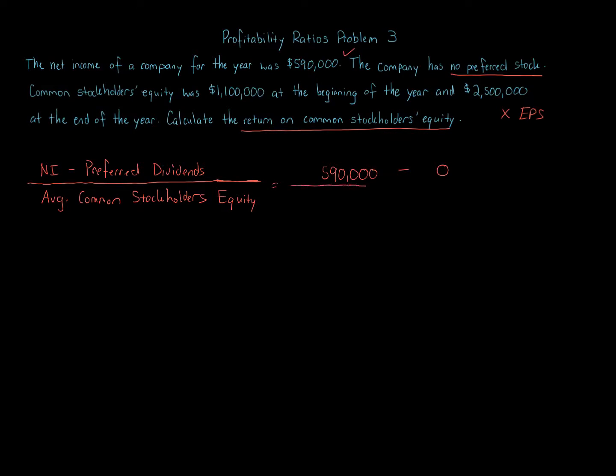The denominator, we've got to get the average, not shares. Caught myself there. Average common stockholders equity, which we're told the beginning and ending period balance for the year. That's exactly how you would calculate it if you had a balance sheet. You would look at the end of last year and the end of this year, because the end of last year rolls over to the beginning of this year. So we're going to take the average of 1.1 million and 2.5 million.